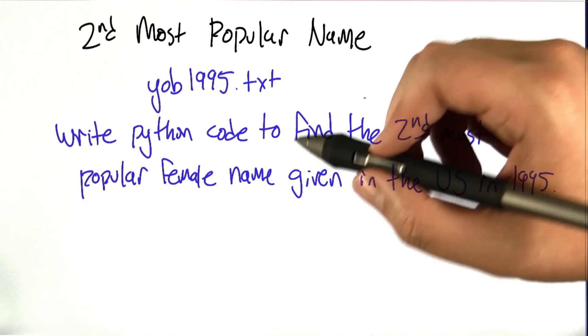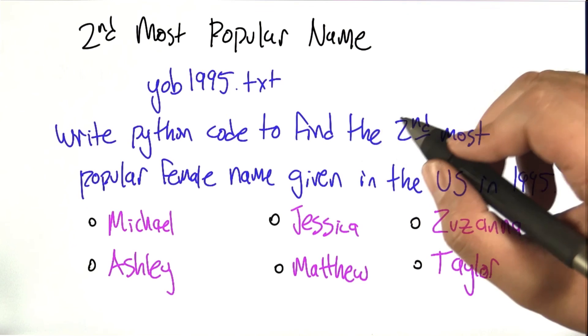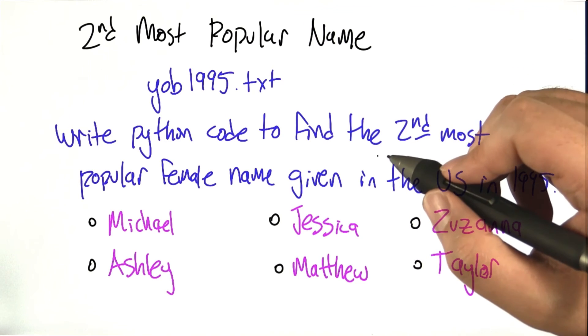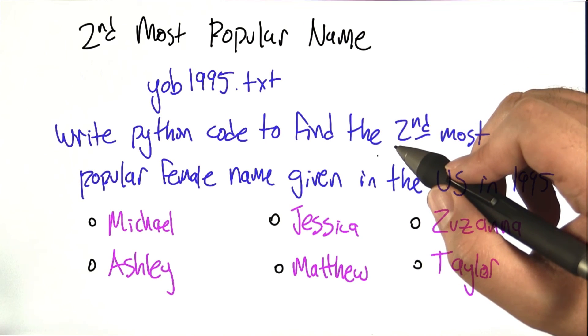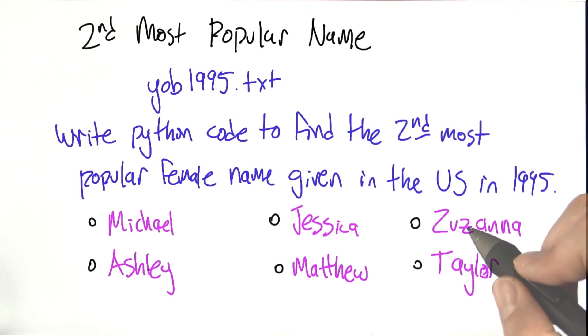What you want to find is the second most popular female name given in the U.S. in 1995. Once your program is completed, it should be able to output the name, and I want you to just check off the name that your program returns.